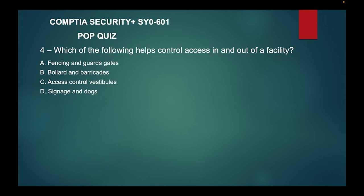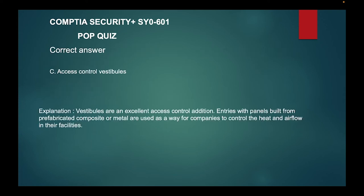Question four: which of the following helps control access in and out of a facility? A) Fencing and guards/gates, B) bollards and barricades, C) access control vestibules, or D) signage and dogs? The correct answer is C — access control vestibules. Vestibules are an excellent access control addition; entries with panels built from prefabricated composite or metal are used as a way for companies to control the heat and airflow in their facilities.